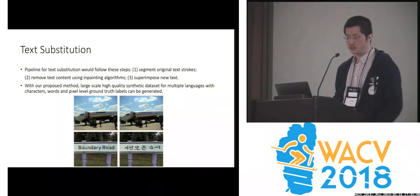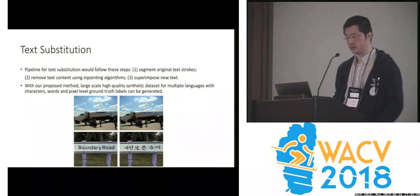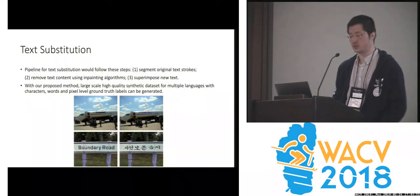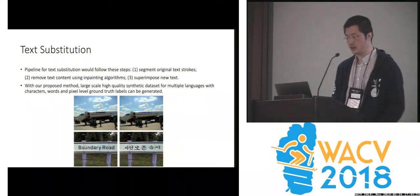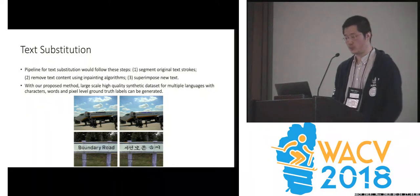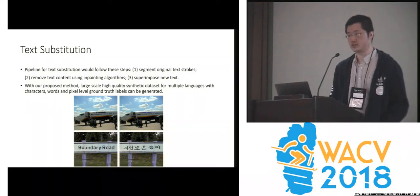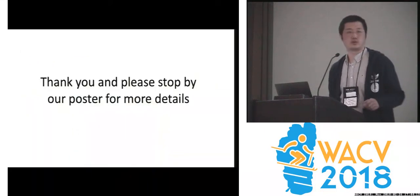So we propose text substitution. Given an image with word-level labeling, we compute accurate text strokes using our method. Then we remove the text content from the image using an inpainting algorithm, and render text in a different language at the same location. In this way, we have a simple method to augment existing text detection datasets and transfer English datasets to different languages. Thank you, please stop by our poster.